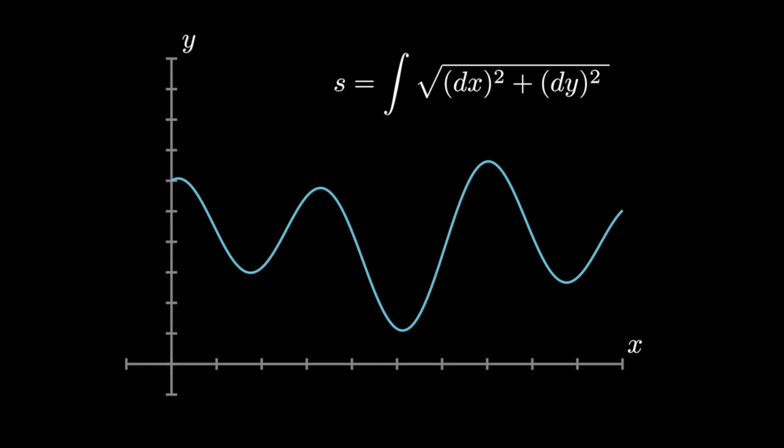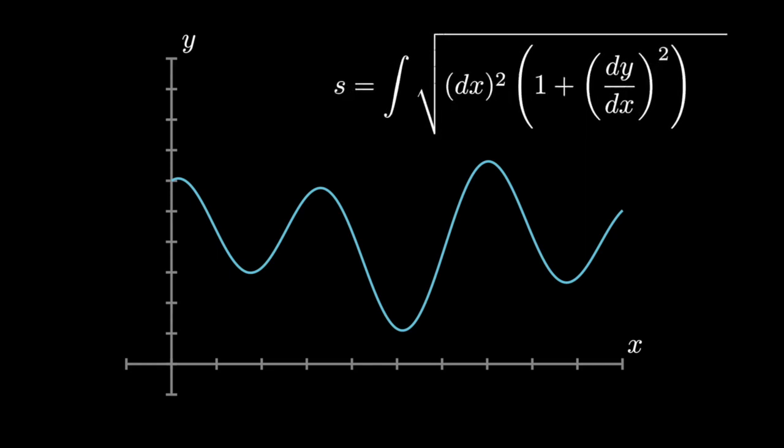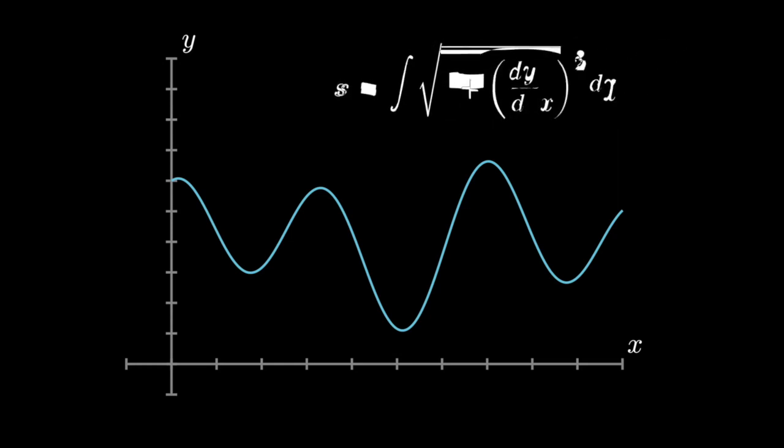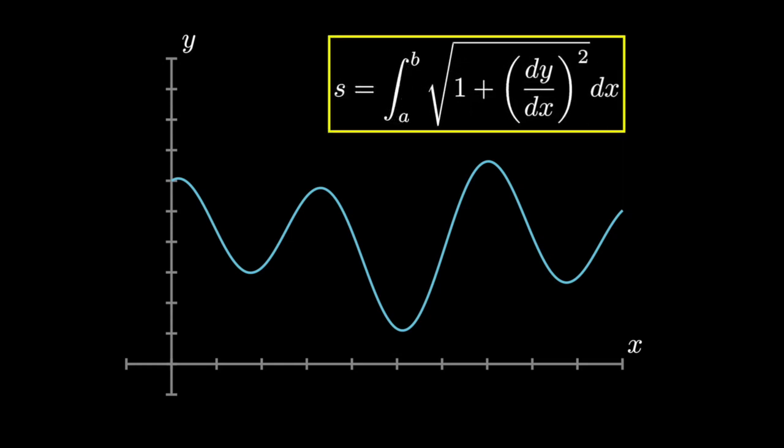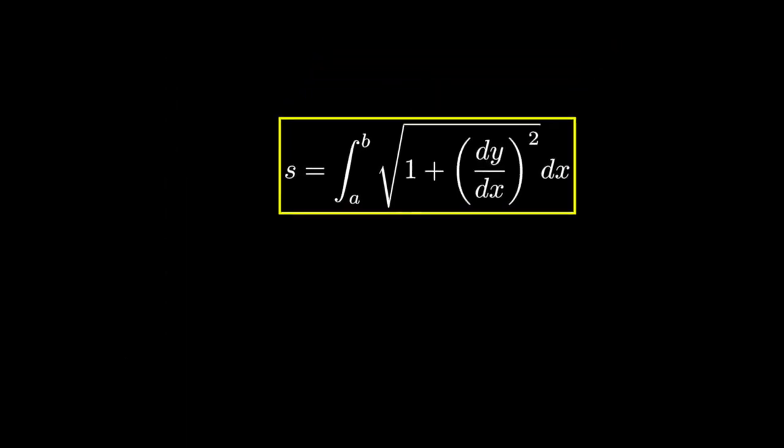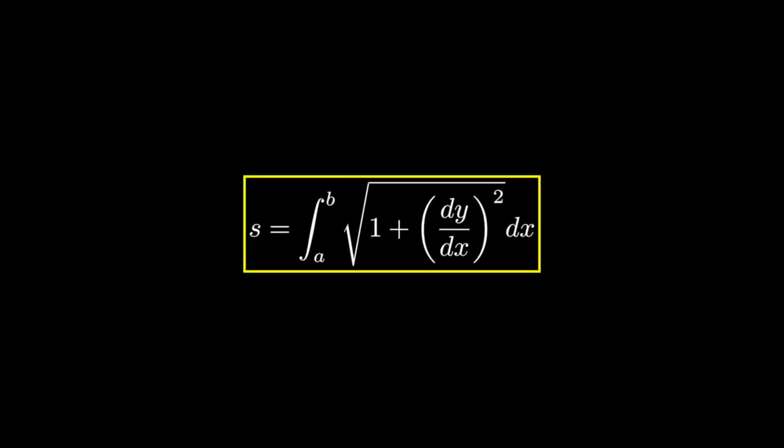However, it is hard to use. What we can actually do is factor out a dx from inside the square root and take it to the outside. So there is a simpler equation, which is way easier to use. It is the integral of the square root of 1 plus dy over dx squared, or the square root of 1 plus the first derivative squared.